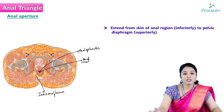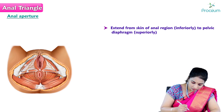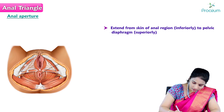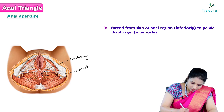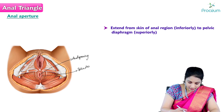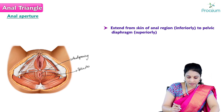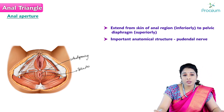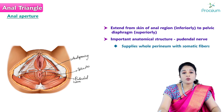The ischiorectal fossa is related inferiorly to the skin and superiorly to the pelvic diaphragm, which is formed by the levator ani and coccygeus muscles. The perineum is divided into the urogenital triangle anteriorly and the anal triangle posteriorly. Another important anatomical structure within the anal triangle is the pudendal nerve, which supplies the whole perineum with somatic fibers.